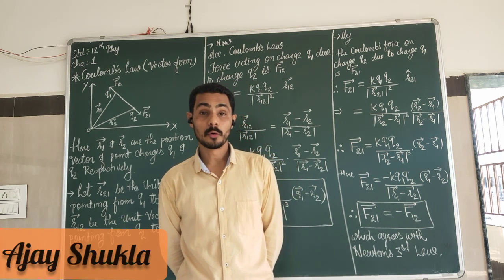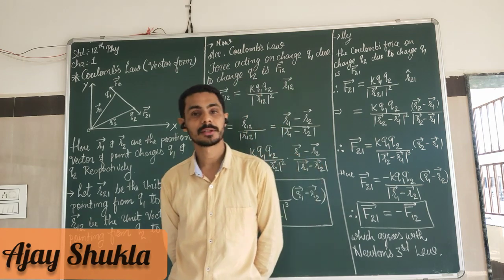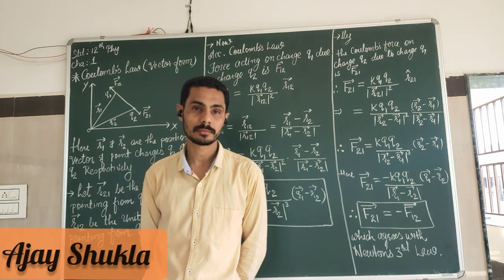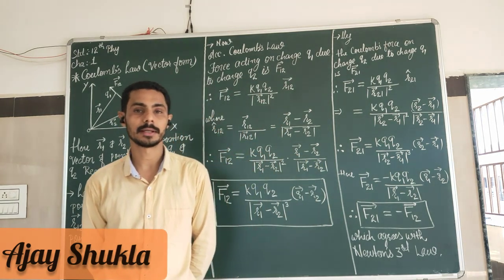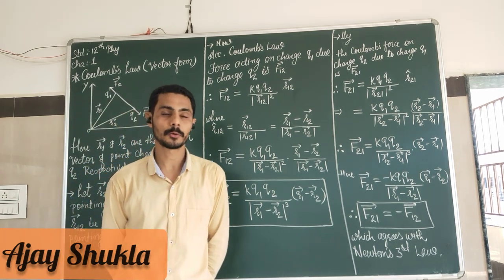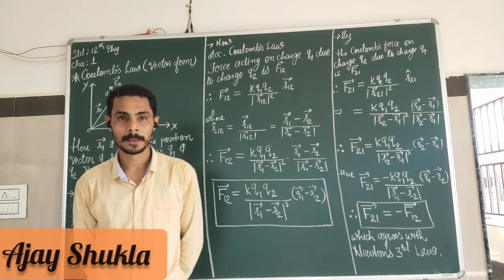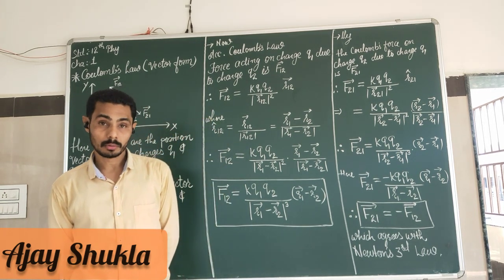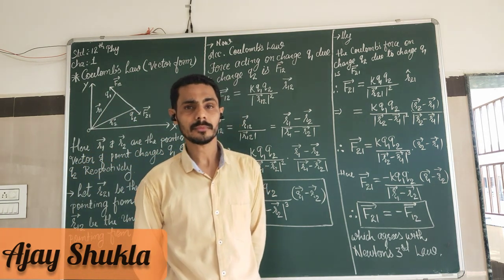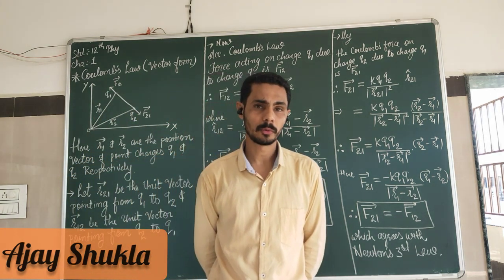Because force is a vector quantity. To find out the force, you need to find out the value and direction — that means both the magnitude and direction. So the Coulomb force which is on the charge particle, we can find out its value and the direction in which it acts.